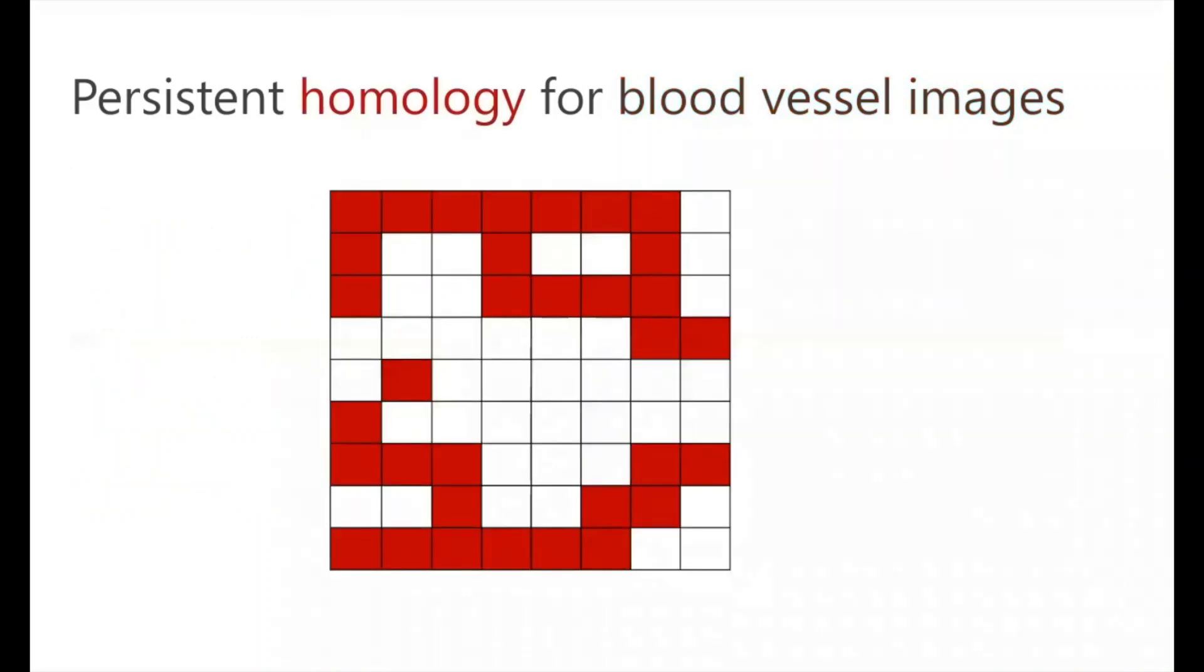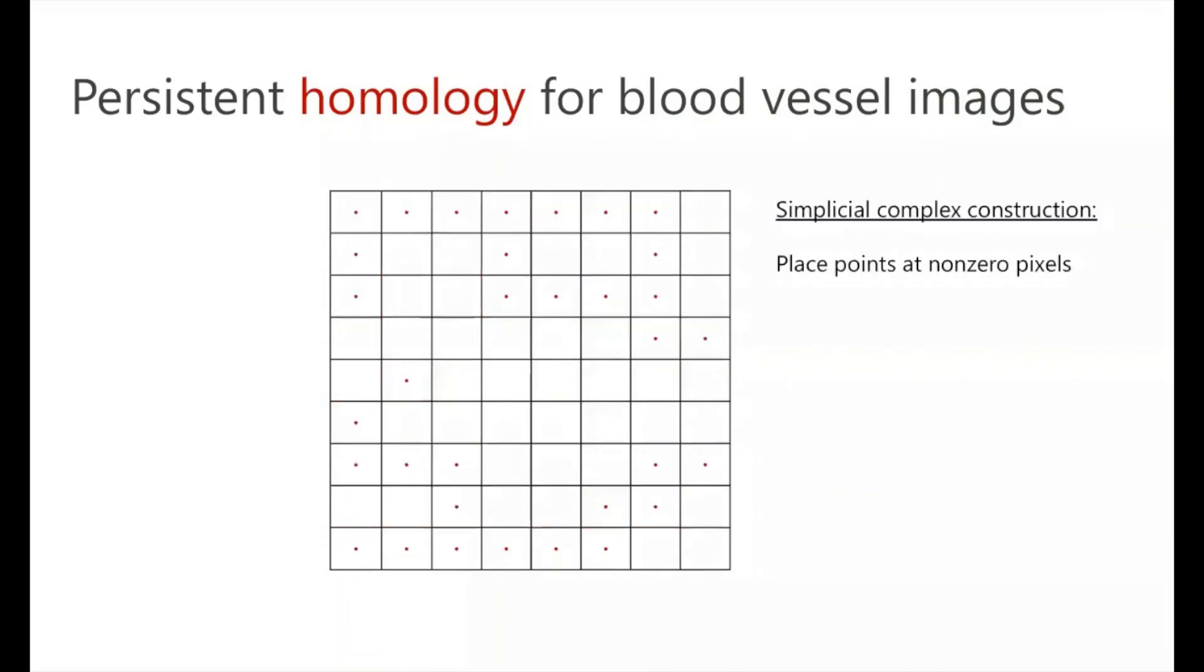So first off, let's focus on the homology of an individual image. So what we're going to do is from this binary image, we're going to create a simplicial complex, or a collection of simple shapes. And the way that we're going to do this is we're going to start off with dots, and we're going to place points at the non-zero pixels from our image.